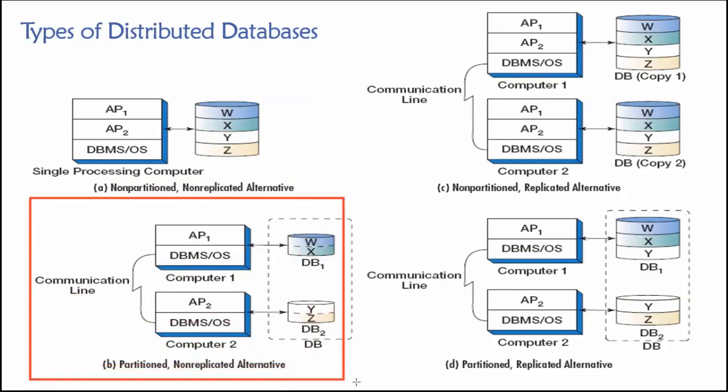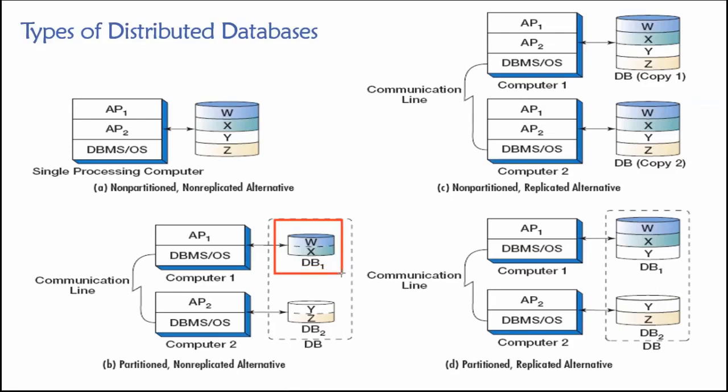Next approach is down here in the lower left. And this one shows a partitioned design, in which one part of the database is stored on computer or one database server, and another part of the database is stored on another computer or another server. So maybe here we have tables W and X stored on machine number one.